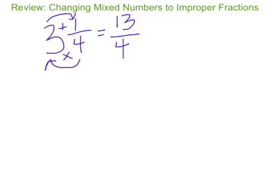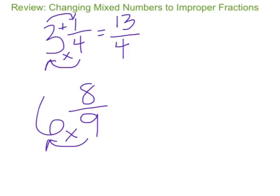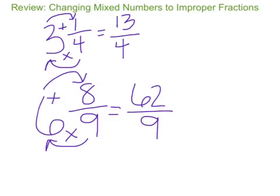Let's look at one more problem. 6 and 8/9. First, we are multiplying the denominator times the whole number. Second, we are taking that answer and we are going to add 8 into it. And then everything on the right side will go over 9, because that was our original denominator. 6 times 9 is 54. 54 plus 8 is 62. 62/9 is an equivalent improper fraction for the mixed number 6 and 8/9.